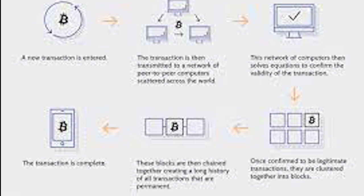As the first step, a transaction is entered into the block. In the second step, the particular transaction is then transmitted to a network of peer-to-peer computers scattered across the world. The third step: this network of computers solves equations to confirm the validity of the transaction. In the fourth step, once confirmed to be a legitimate transaction, they are clustered together into blocks. The fifth step is that these blocks are then chained together, creating a long history of all transactions that are permanent. And the final step of this transaction process is the completion of the particular transaction.